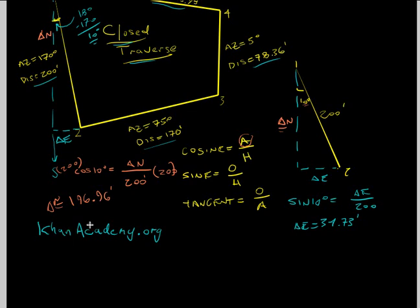So now we can apply, we know the coordinates to point one. Now we can apply these change in northings and change in eastings to get to point two. Okay. So to get to point two from one with the change in northing, we're going negative, right? We're going down.